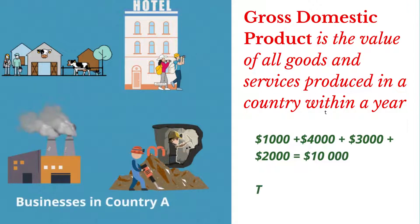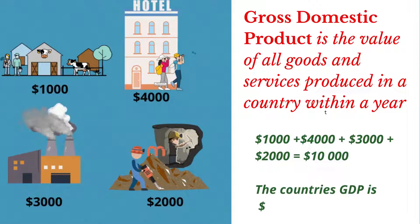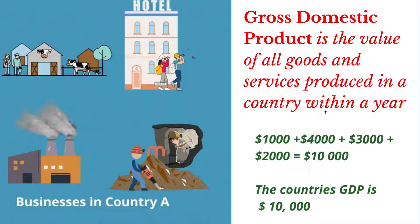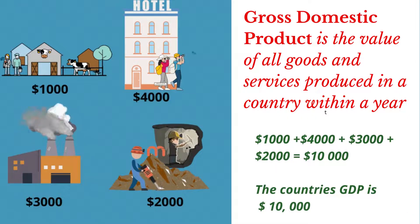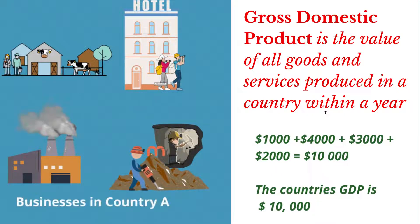The total value of all goods and services produced in a country within a year is known as the gross domestic product, abbreviated GDP.